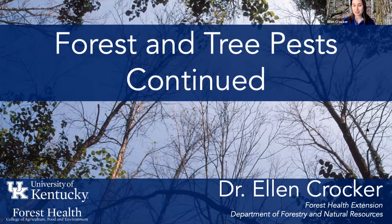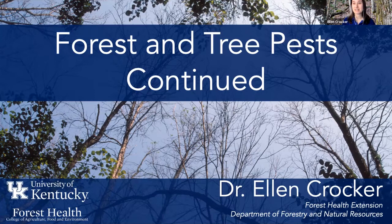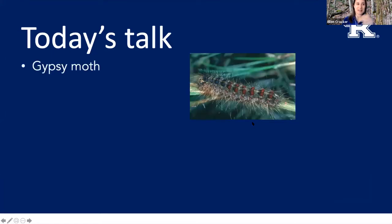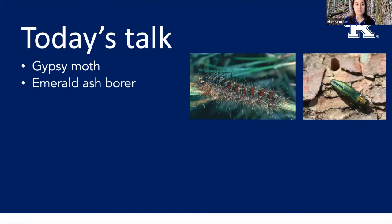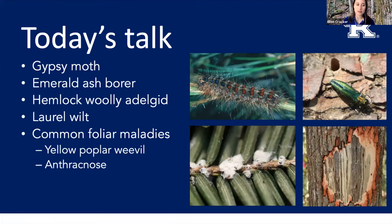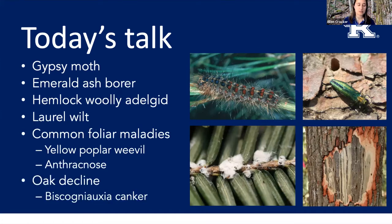I'm thankful that we don't have Asian longhorn beetle in my part of the woods yet, as well as spotted lanternfly. We will try not to get them for as long as possible — prevention and slowing the spread of those things is the best strategy so you're not trying to play catch up on the other end. Today I'm going to be talking about a wide range of different insects and diseases that can impact particularly hardwood systems: gypsy moth, emerald ash borer, hemlock woolly adelgid, laurel wilt, a whole range of common foliar issues including yellow poplar weevil and anthracnose, and then oak decline and some associated issues.